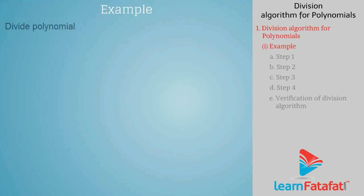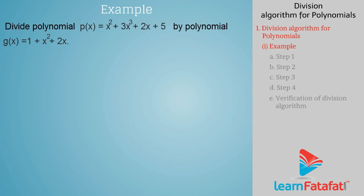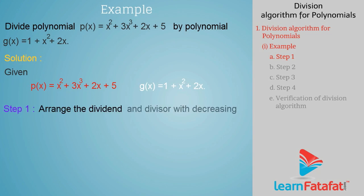For example, divide polynomial P of X equal to x squared plus 3x cubed plus 2x plus 5 by polynomial G of X equal to 1 plus x squared plus 2x. Solution: Given data, polynomial P of X is equal to x squared plus 3x cubed plus 2x plus 5, and polynomial G of X is equal to 1 plus x squared plus 2x.